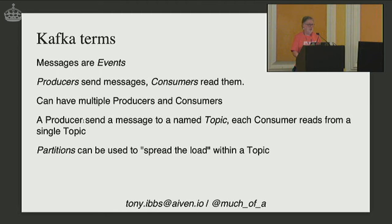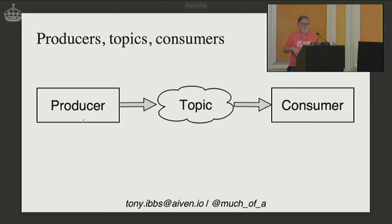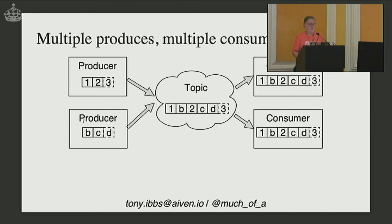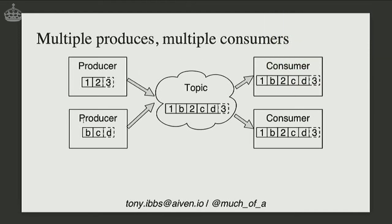In a very simple case, a producer sends events to a topic and a consumer reads from it. If we've got events one, two, three, four coming out of our producer, the topic stores them and the consumer consumes them in that order, as you'd expect. With multiple producers — say one sending events 1, 2, 3 and another sending A, B, C — they occur in some order in the topic and all consumers get them in that order.